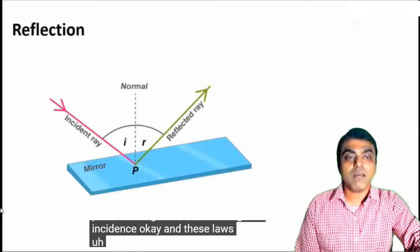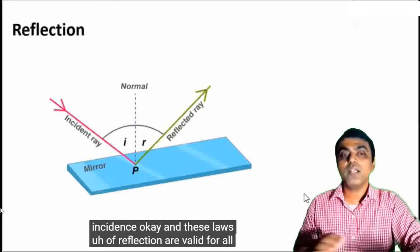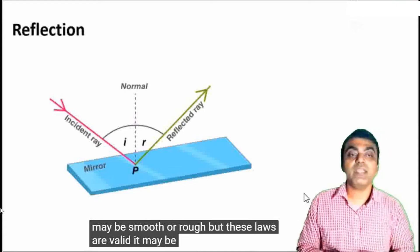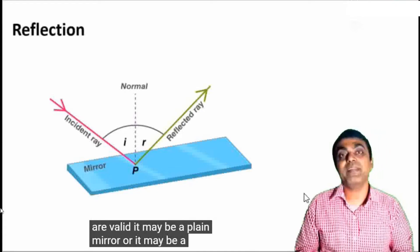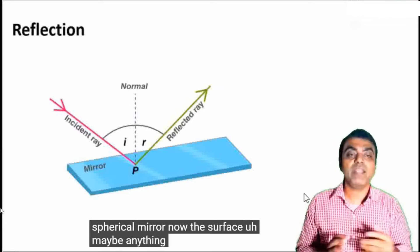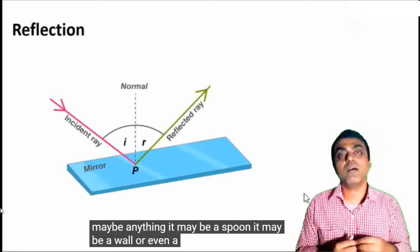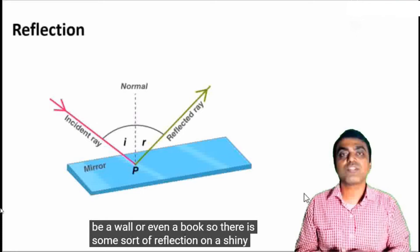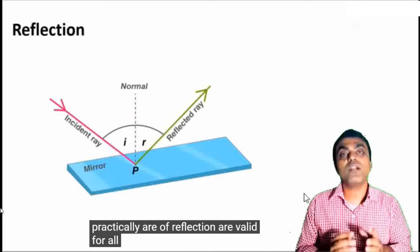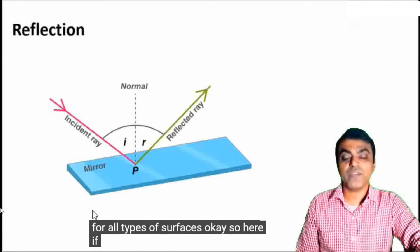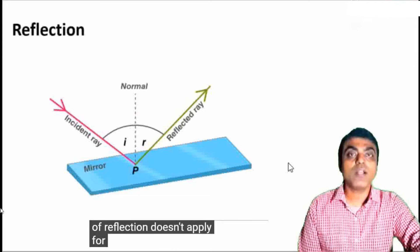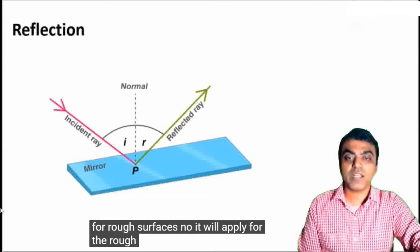These laws of reflection are valid for all types of reflecting surfaces. The surface may be smooth or rough, but these laws are valid. It may be a plane mirror, a curved mirror, cylindrical, or a spherical mirror. The surface may be anything — a spoon, a wall, or even a book — there is some sort of reflection on a shiny, glossy substance. So these laws of reflection are valid for all types of surfaces. It doesn't mean that they don't apply for rough surfaces — they will apply for rough surfaces as well.